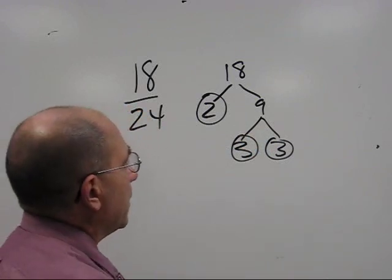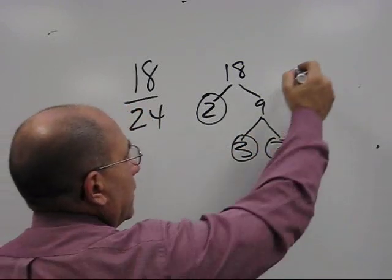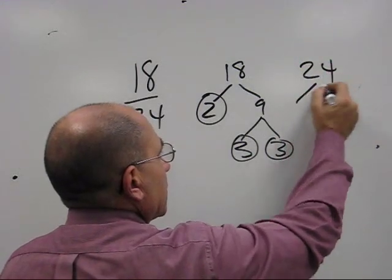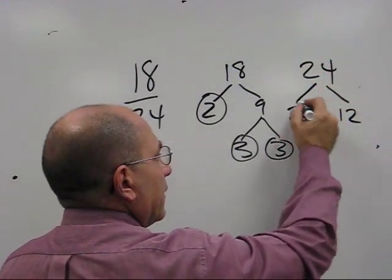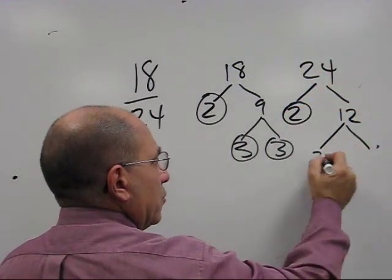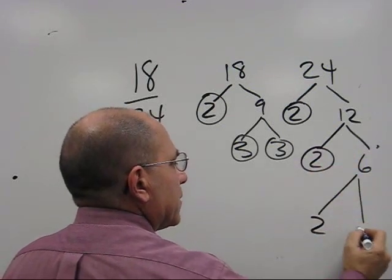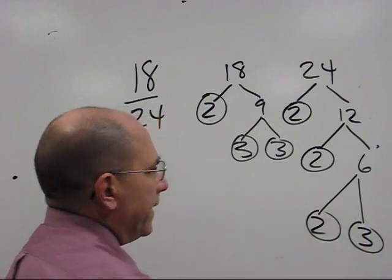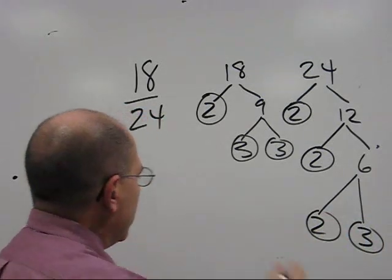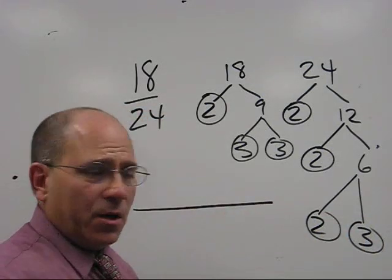And then 24 would be the same thing. We're going to take 24 and like this and we'll say 2 times 12 and circle that. 2 times 6 and we'll circle this and 2 times 3 and we'll circle that. Now we have our primes for both of them.